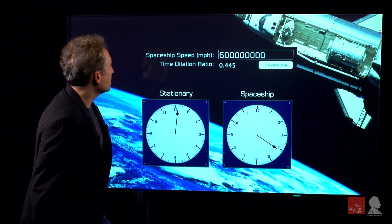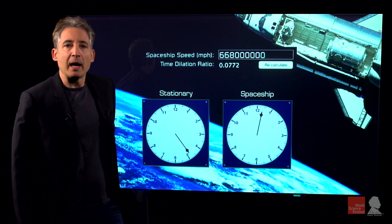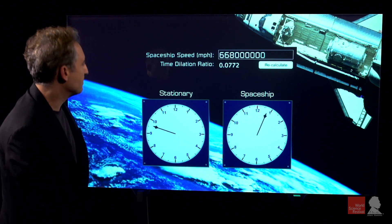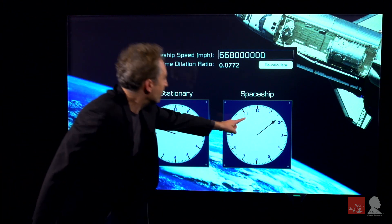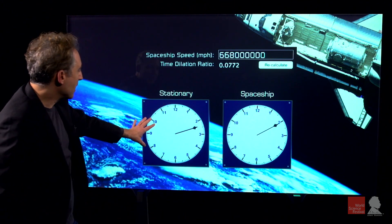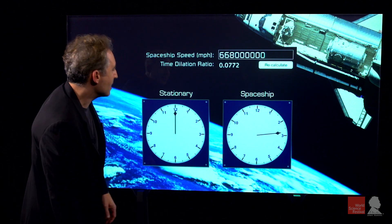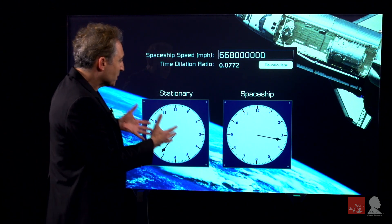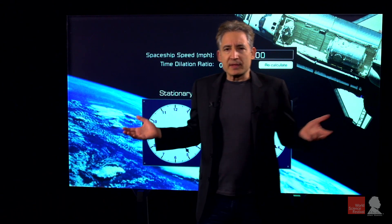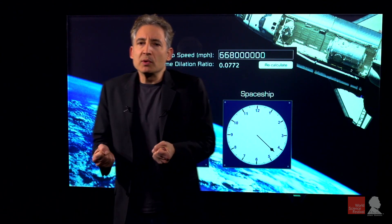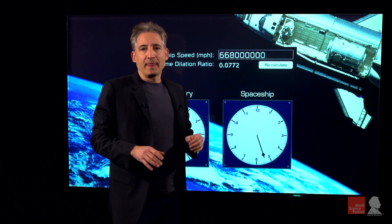And just to see it even more starkly, let's bring that speed of the ship even higher — let's put it at 668 million miles an hour, just below the speed of light. And look at how time is elapsing on the spaceship clock: very slow compared to the rate at which time elapses on our ordinary clocks here on Earth. This really illustrates quite wonderfully how we don't know about the slowdown intuitively because we never achieve speeds anywhere near the speed of light.